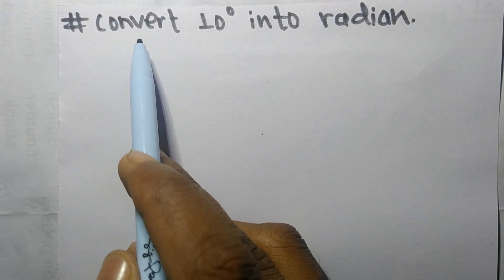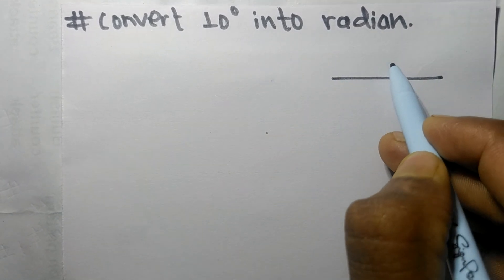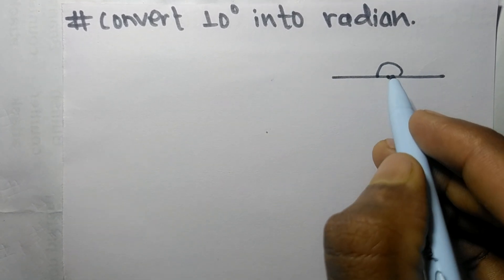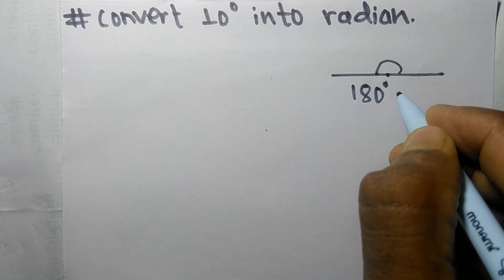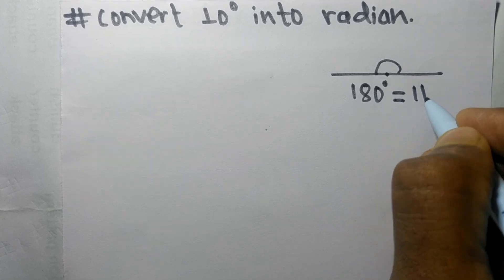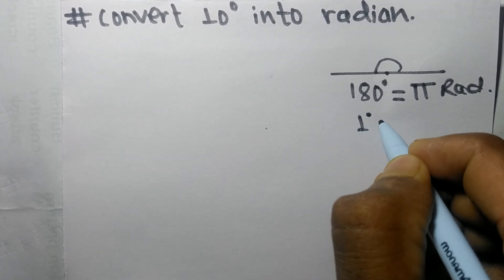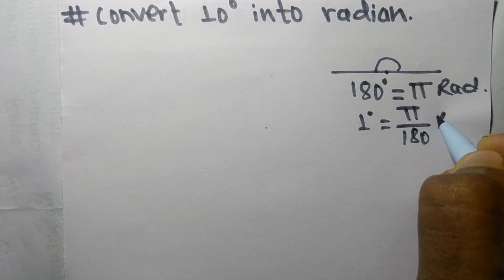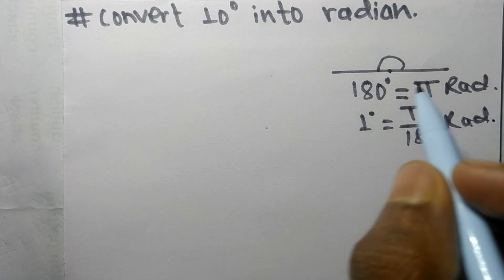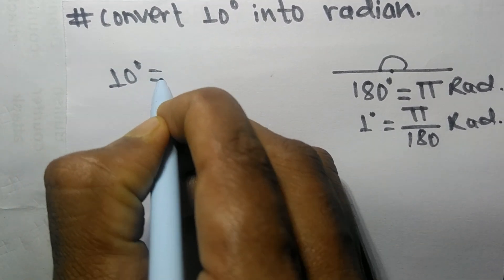Today we shall learn to convert 10 degrees into radians. In a semicircle, the sum of angles is 180 degrees, which is equal to π radians. Therefore, 1 degree is equal to π/180 radians. Here we need to convert 10 degrees, so 10 degrees is equal to 10 multiplied by π/180 radians.